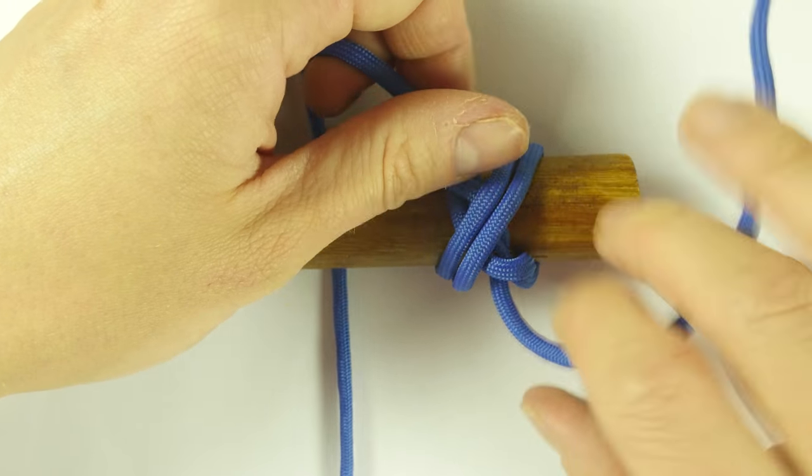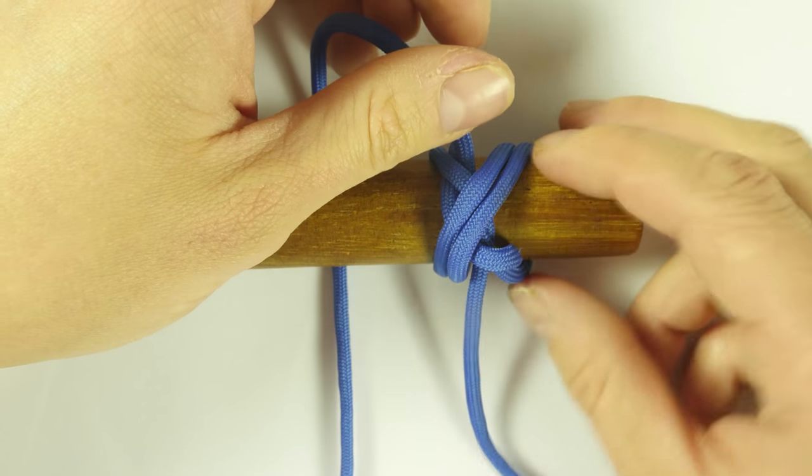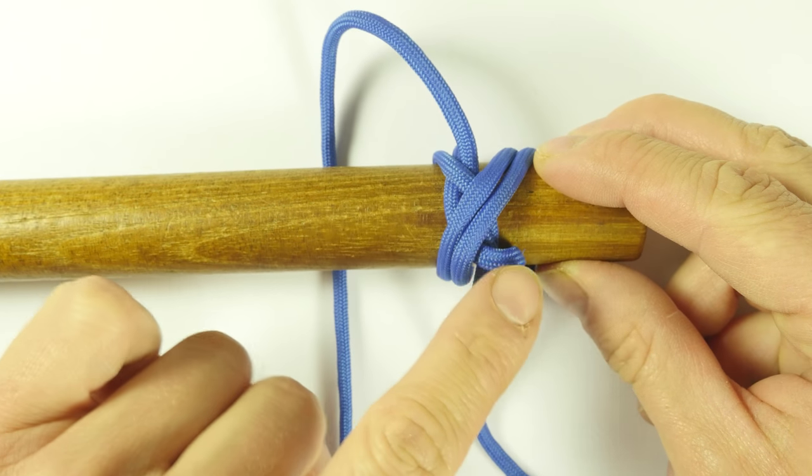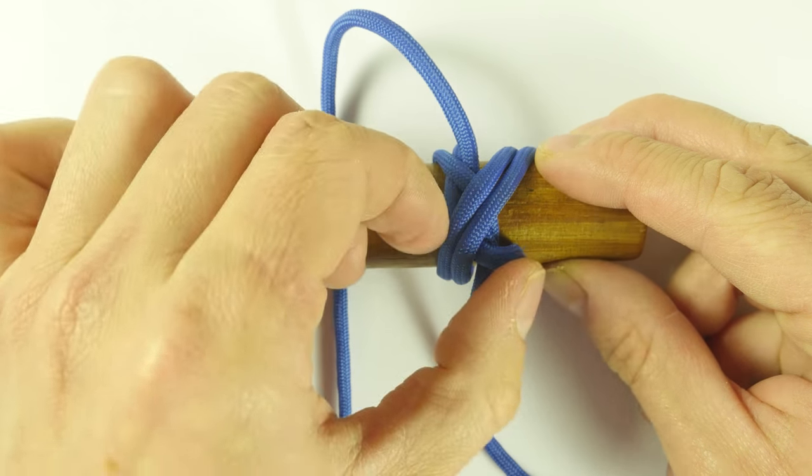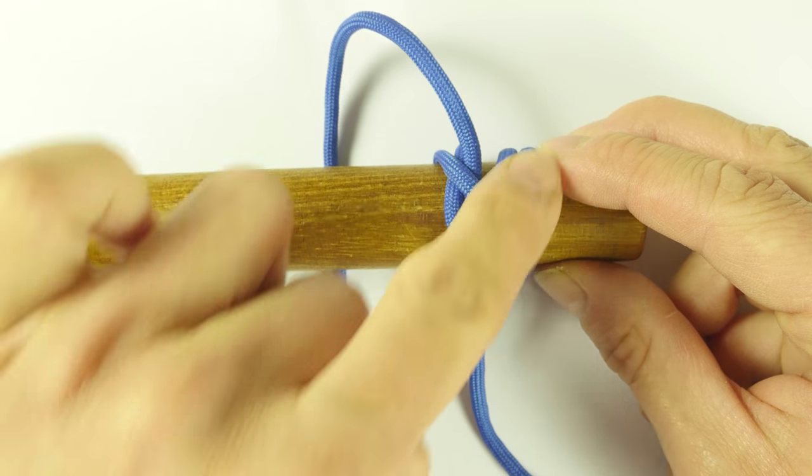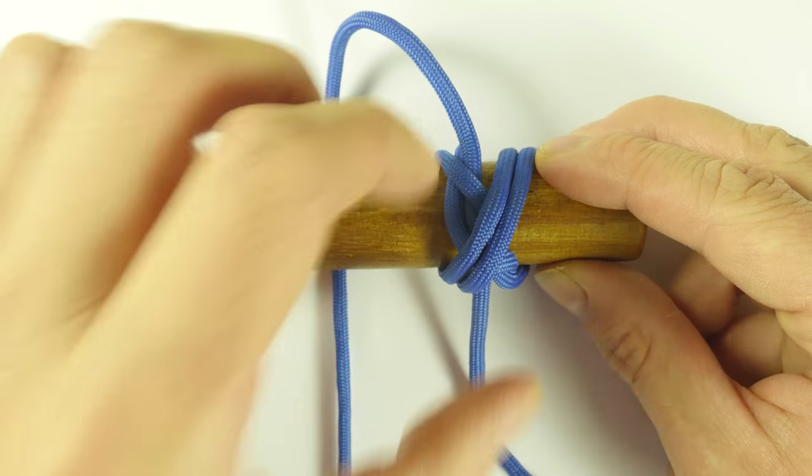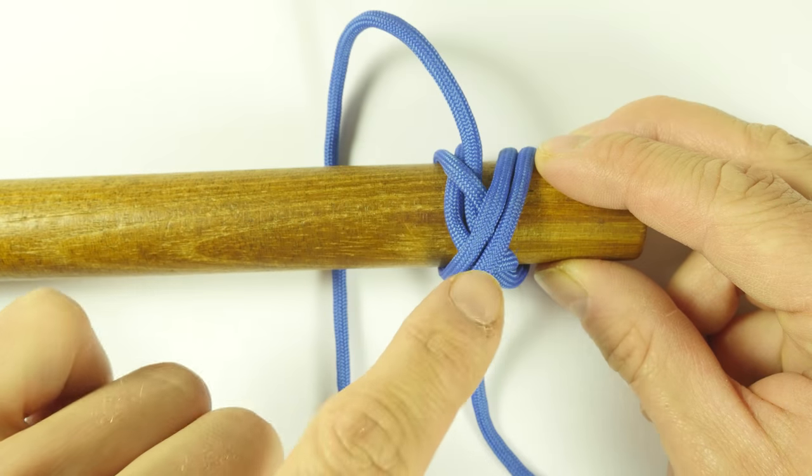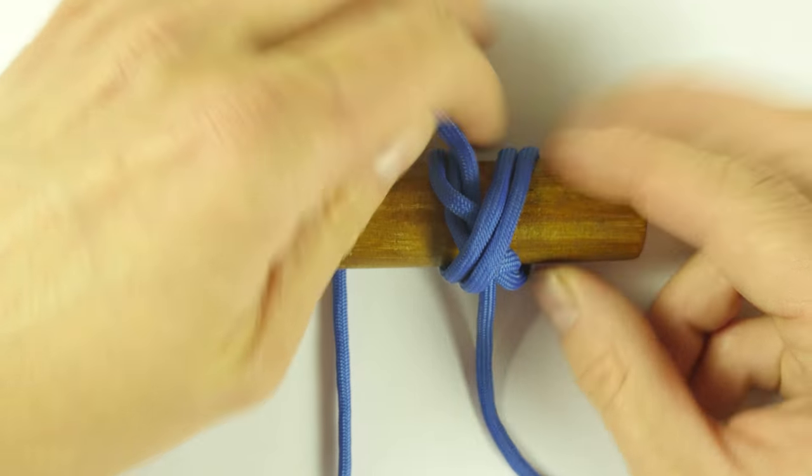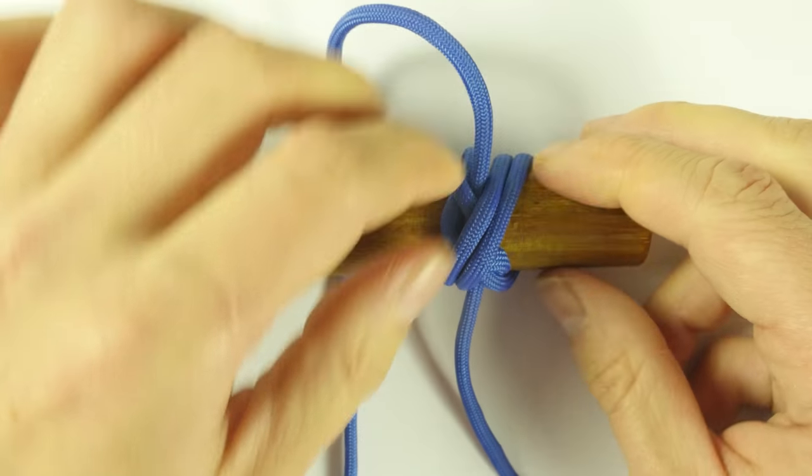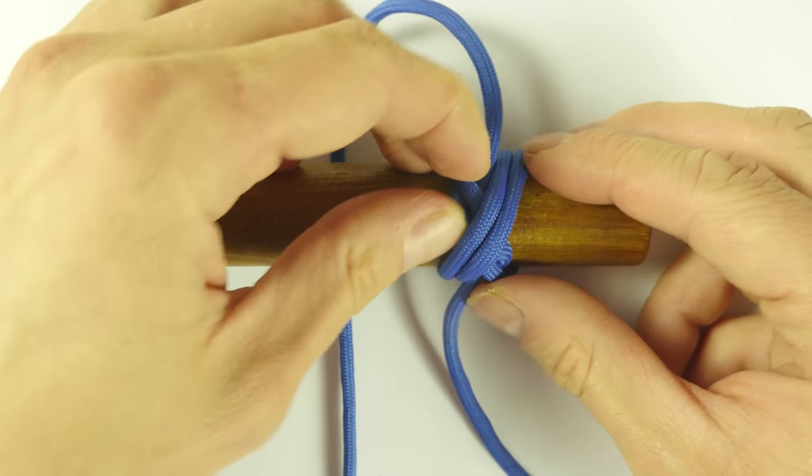Tighten it up a bit, and the goal here is to have these twisted sections under these parallel sections. So the twisted sections are hidden out of sight. So you always tighten up with this in mind.